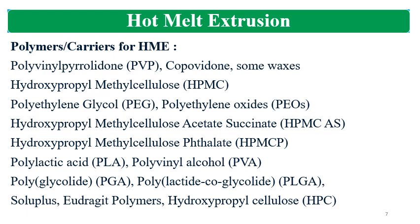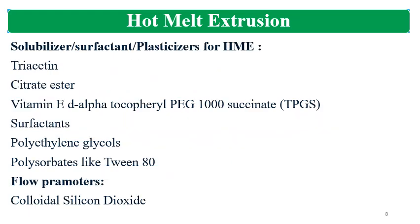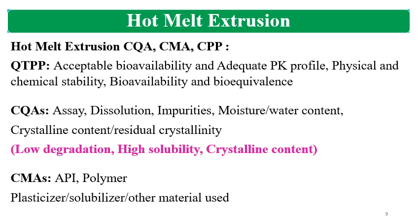Many other polymers may also be applicable, but these are the most repeatedly used ones. The polymer is selected based on the required drug-to-polymer ratio, processing conditions, and pre-formulation studies. These polymers may be hydrophilic or hydrophobic, with pH-dependent or pH-independent solubility. Solubilizers, surfactants, or plasticizers such as triacetin, citric acid esters, Vitamin E TPGS, PEG, and polysorbates like Tween-80 can also be used. If the API and polymer mixture lacks good flow, flow promoters such as aerosil or colloidal silicon dioxide can be added.